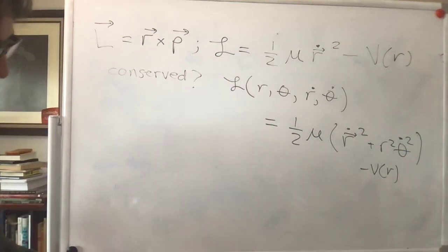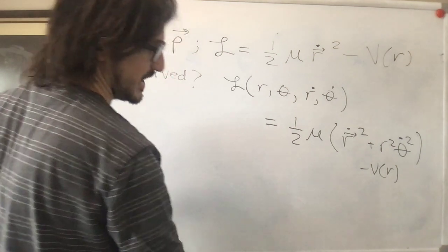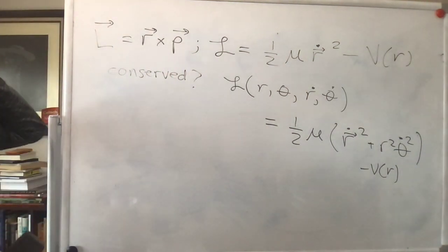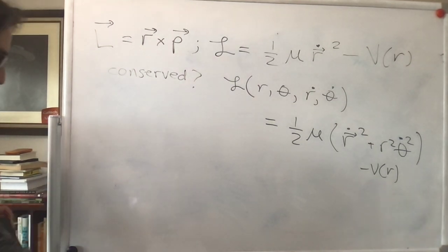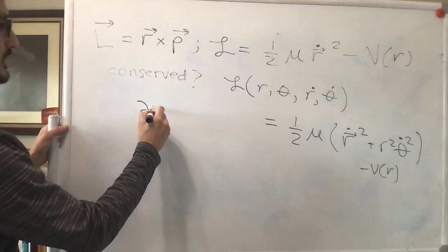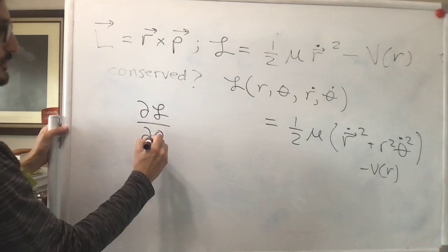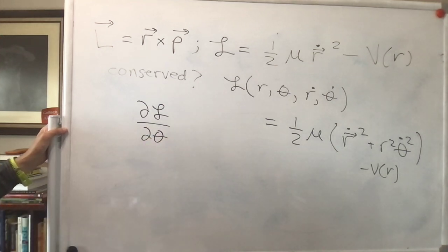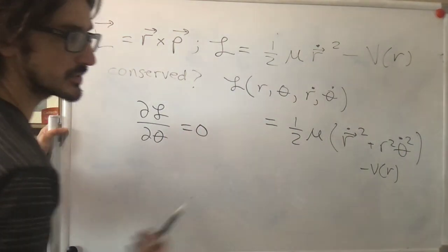Because this is identical to the one-body problem we're going to use m rather than mu — but be mindful that it is the same. Since the angular momentum is conserved, we're going to have the partial derivative of the Lagrangian with respect to θ equal to zero. You can see it right here — we have no dependence on θ.